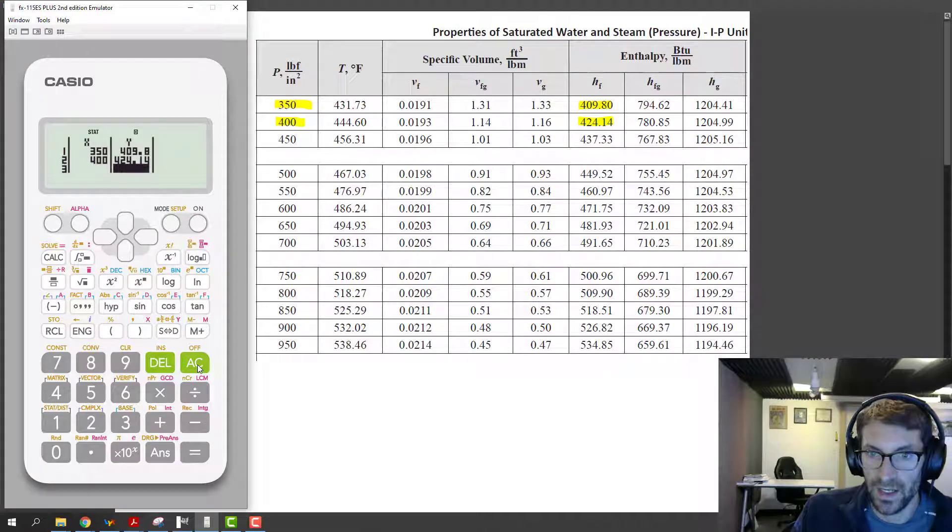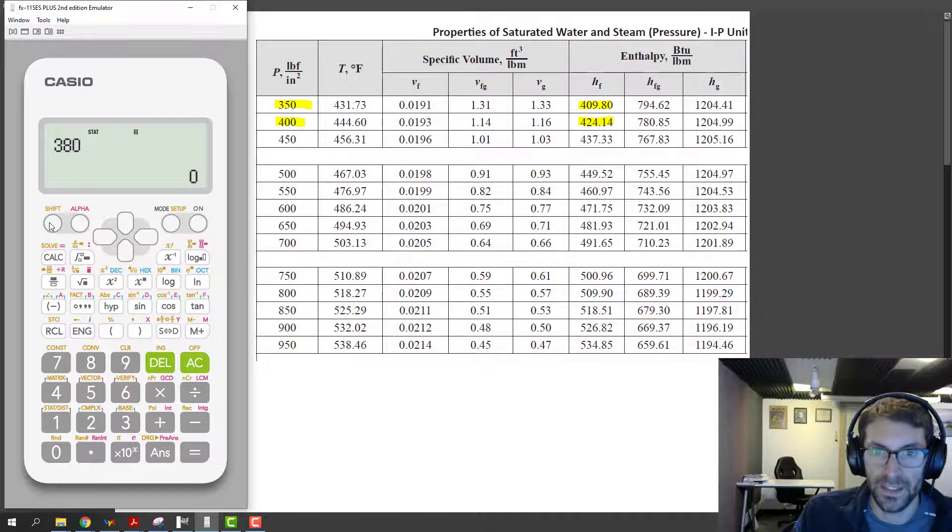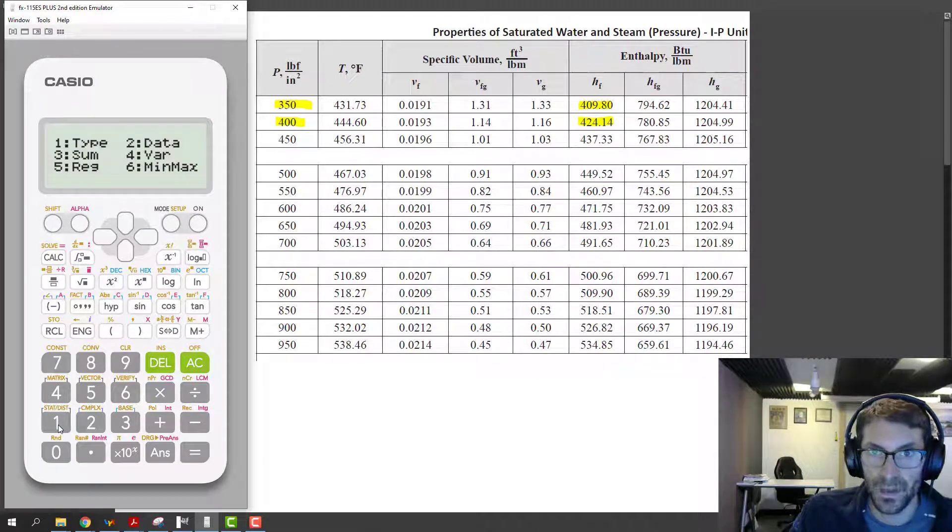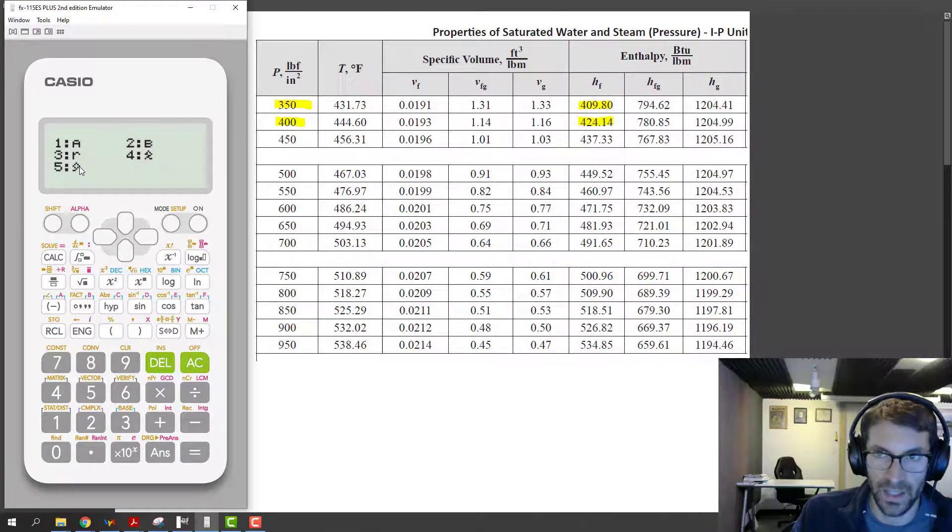So then just hit AC to clear that, and now to use it, the pressure we're interested in getting the enthalpy for is 380. So we type in 380 and then do shift stat 5 for regression, because this is a linear regression, and then 5 again for this y hat, which is to say that we want the corresponding y value for the x value that we typed in, which was 380.